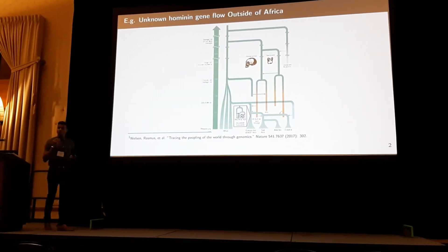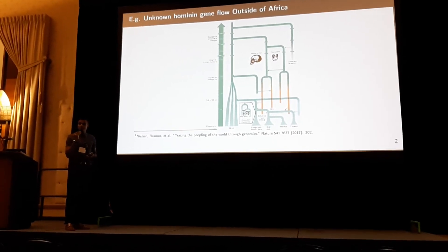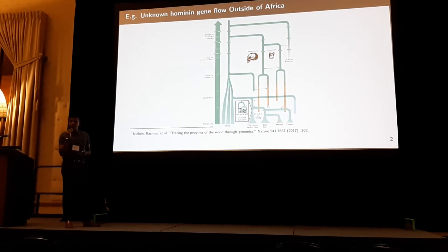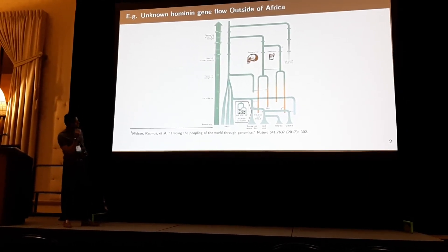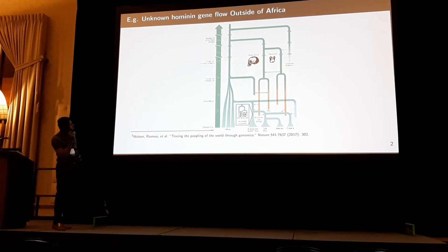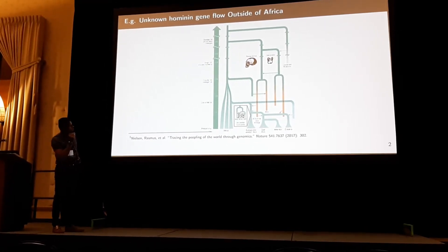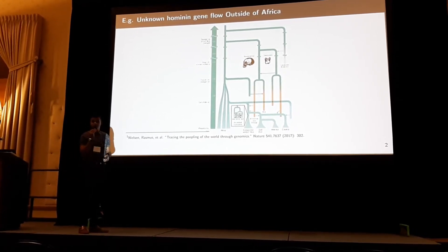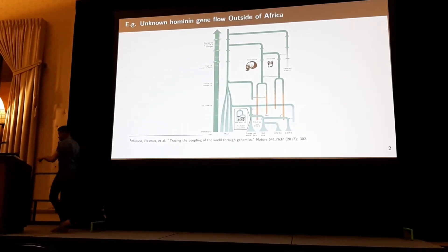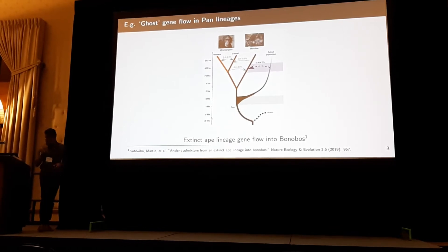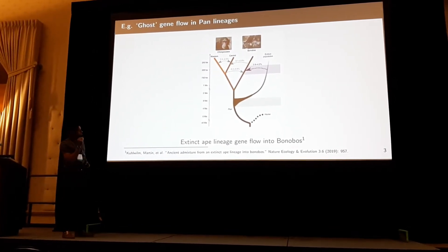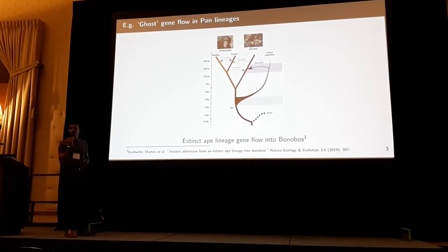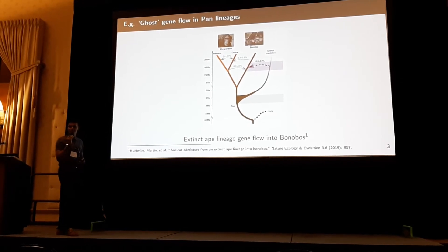There are a lot of examples where people have estimated the presence of ancestral archaic populations that have gene flow into current extant populations. Here are some examples from a nice figure I picked from a review by Rasmus Nielsen et al., which shows estimated unknown hominin admixture into a lot of current extant genomes. And there's also a recent paper published in Nature Ecology Evolution from some colleagues who looked at gene flow from an unknown ghost ape population into bonobos.